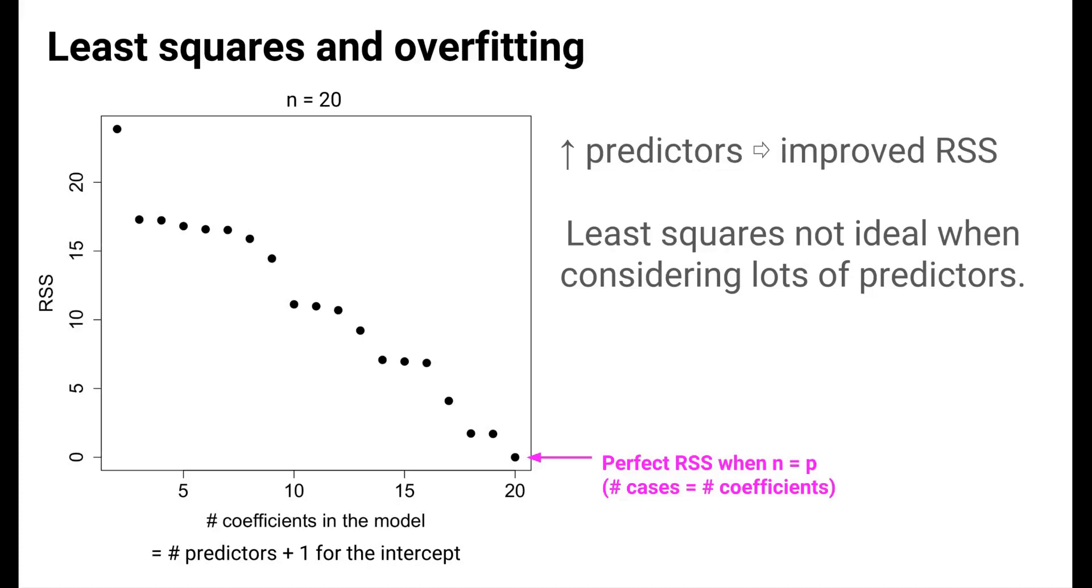In this example, the predictors were random noise, and the fact that adding random noise predictors gives such clear improvements in RSS suggests that the least squares criterion is not ideal when there are lots of predictors being considered. It turns out that the LASSO method uses a modified criterion that helps in cases when there are lots of predictors.